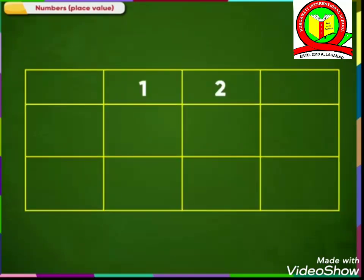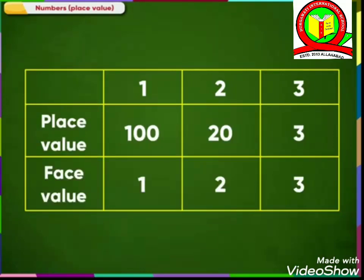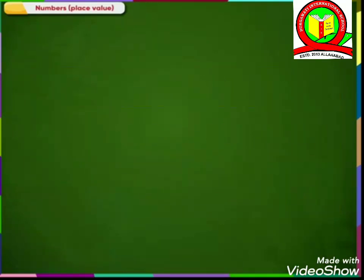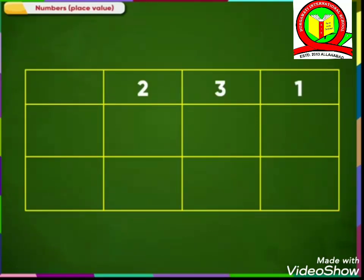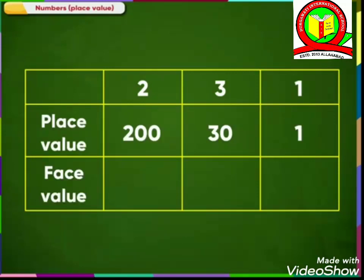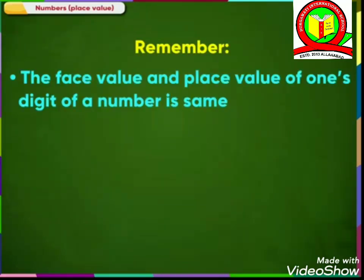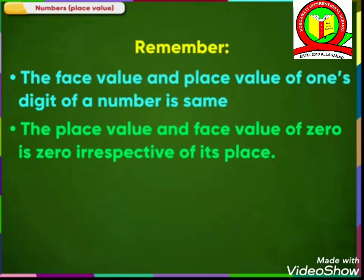We see an interesting thing here. When we change the places of the digits in a number, remember, the place value of each digit changes. But the face value of each digit remains the same, even when we change the places of the digits in a number. Remember, the face value and place value of the ones digit of a number is the same. The place value and face value of 0 is 0, irrespective of its place.